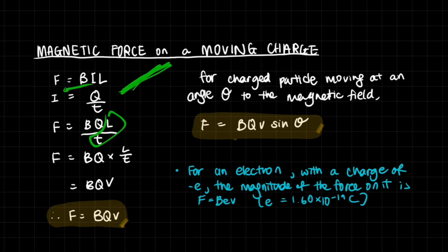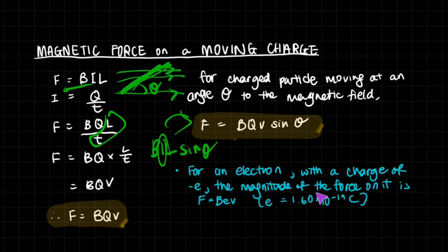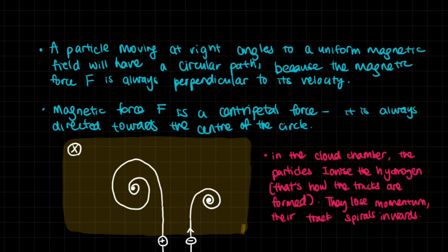For a charged particle moving at an angle theta to the magnetic field, F = BQV sin(theta). Because we learned in the previous video that if there's a length of metal at an angle to the field, it's F = BIL sin(theta). We use the same substitution, so it's F = BQV sin(theta). For an electron with charge negative e, the magnitude of the force is F = BeV, where e is 1.6 × 10^-19 coulombs.